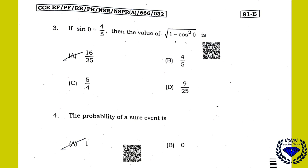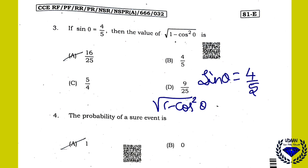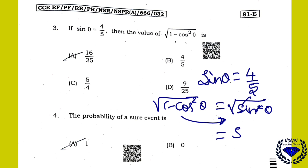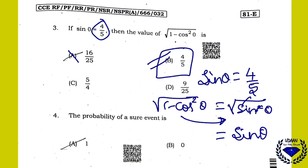Question 3: sin θ = 4/5. Find √(1 − cos²θ). You know that 1 − cos²θ = sin²θ, so the square root cancels and the answer is sin θ = 4/5. Option B is the right answer.